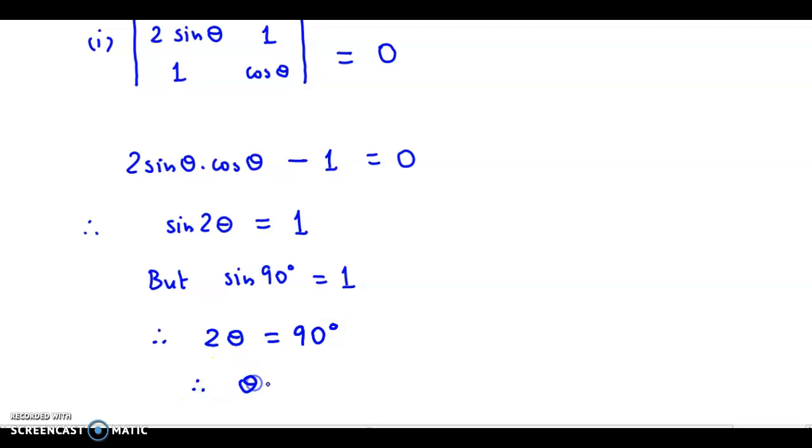So therefore θ is equal to 45 degrees, or in radians we could say it is π/4 radians.